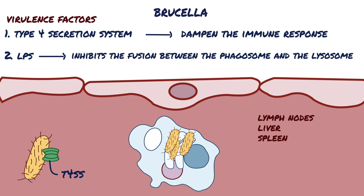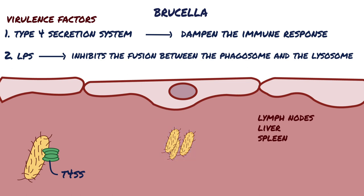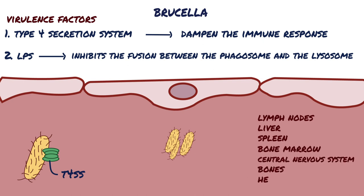Additionally, when the macrophage becomes too small for the growing number of Brucellae, it bursts, releasing the bacteria into the bloodstream. From there, they can spread to organs such as bone marrow, the central nervous system, bones, heart, and lungs.